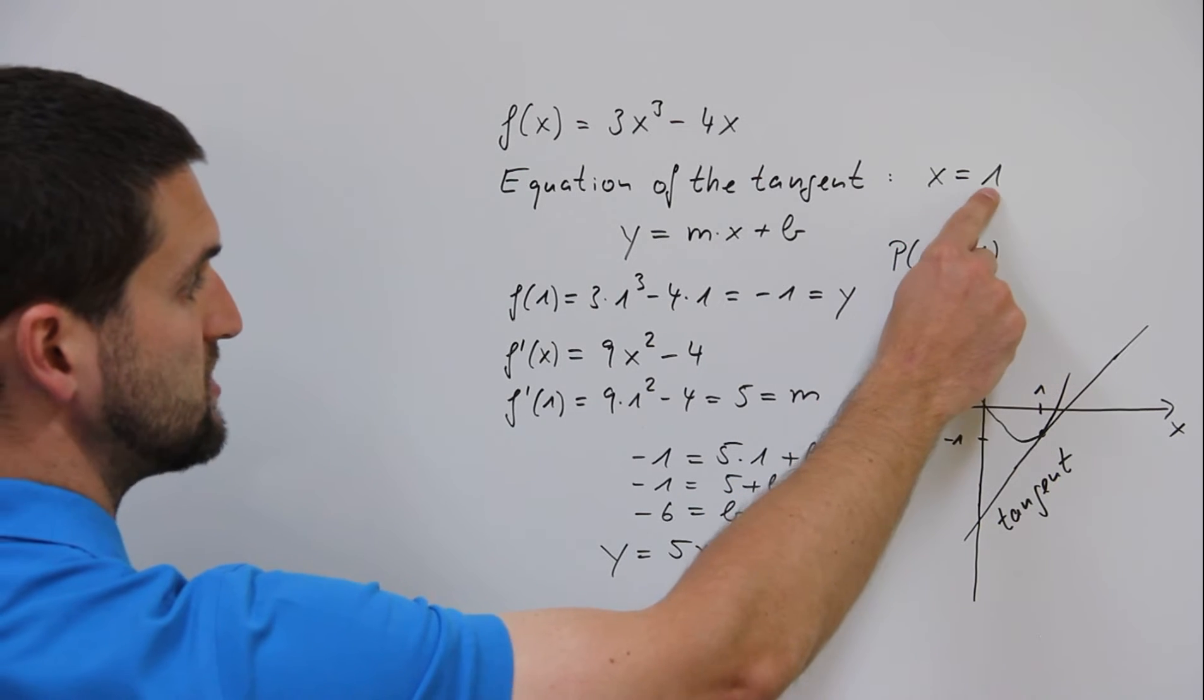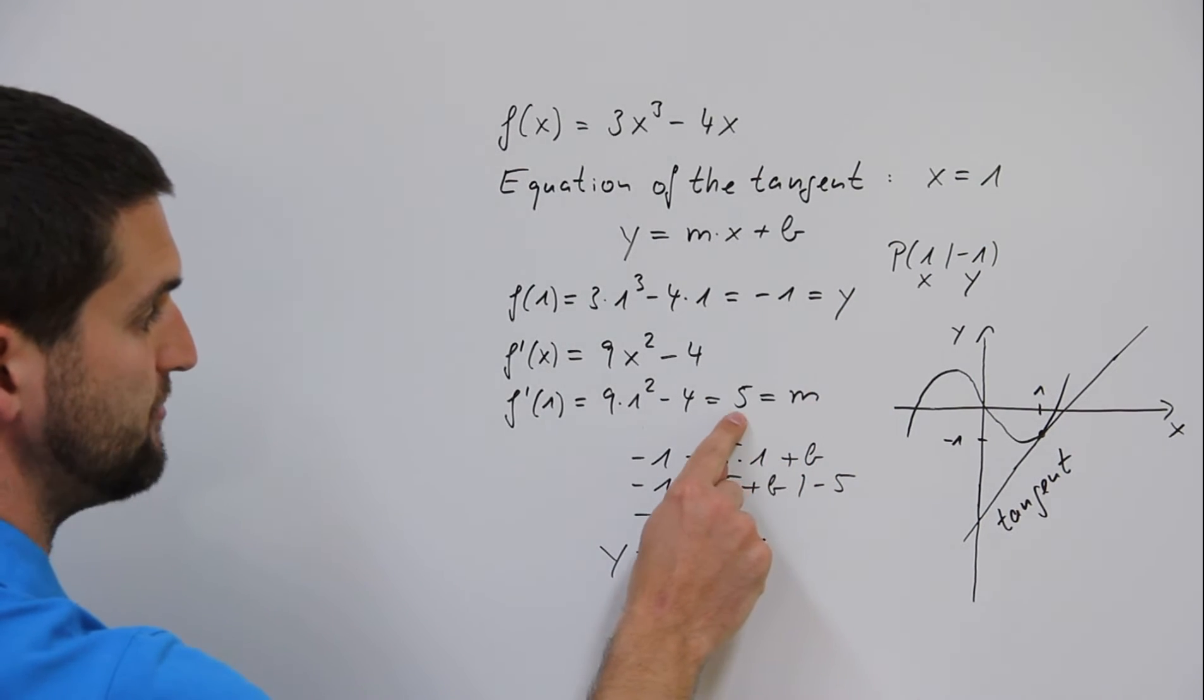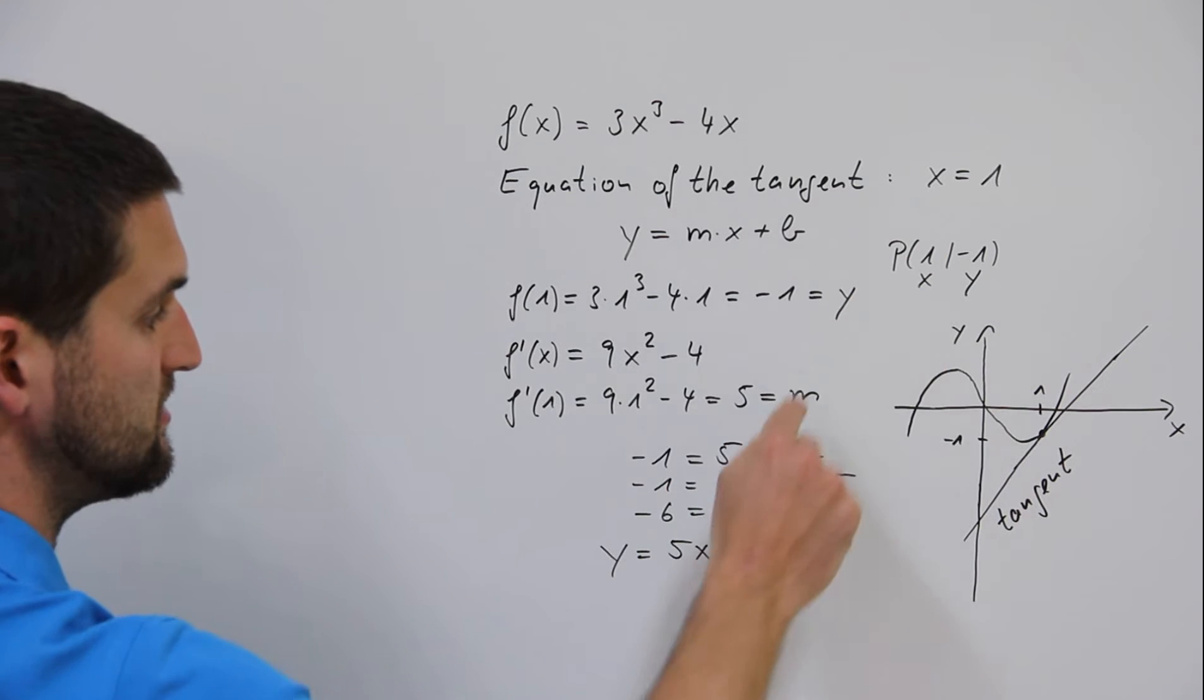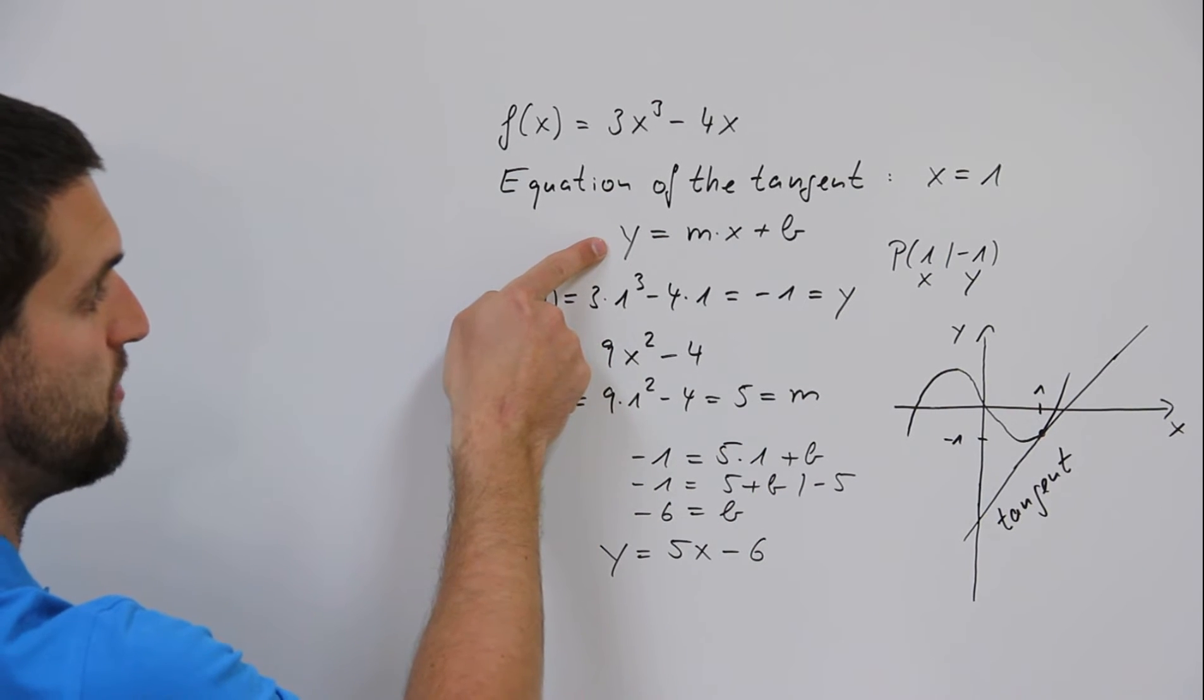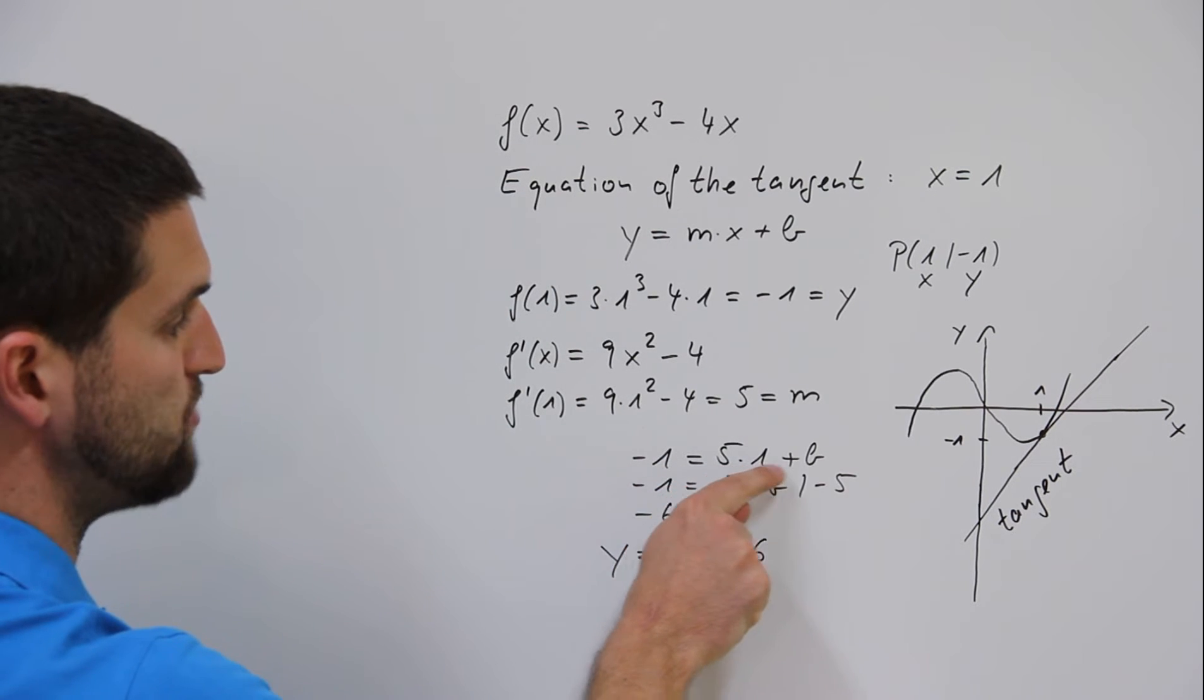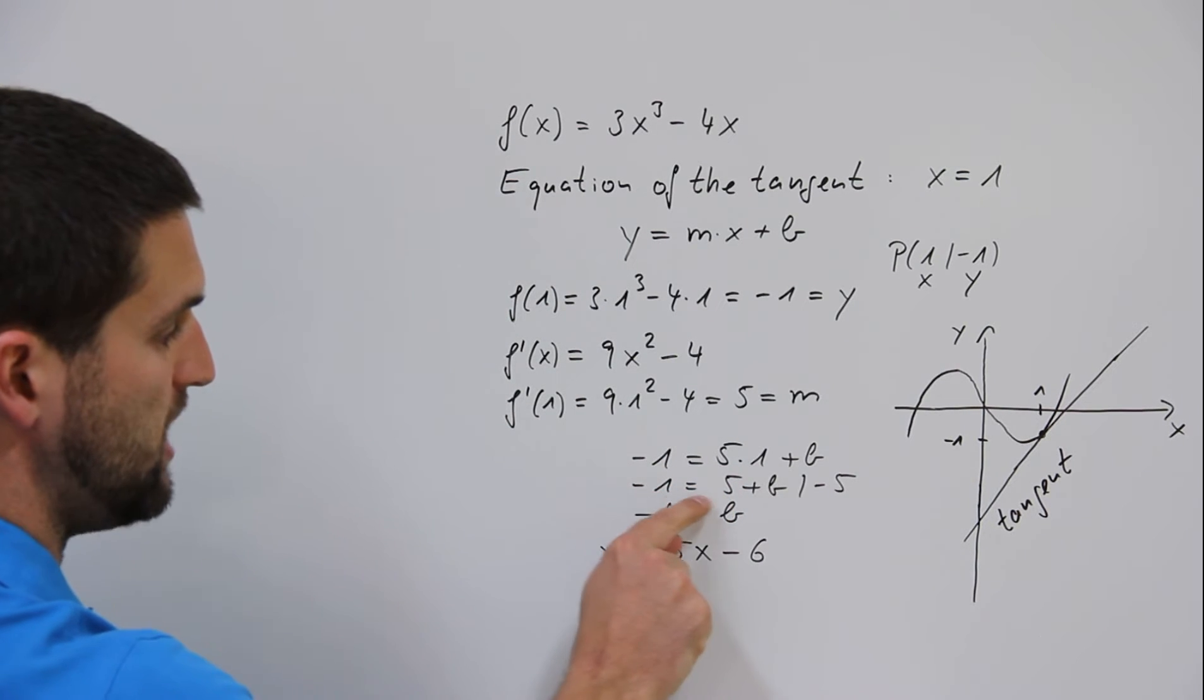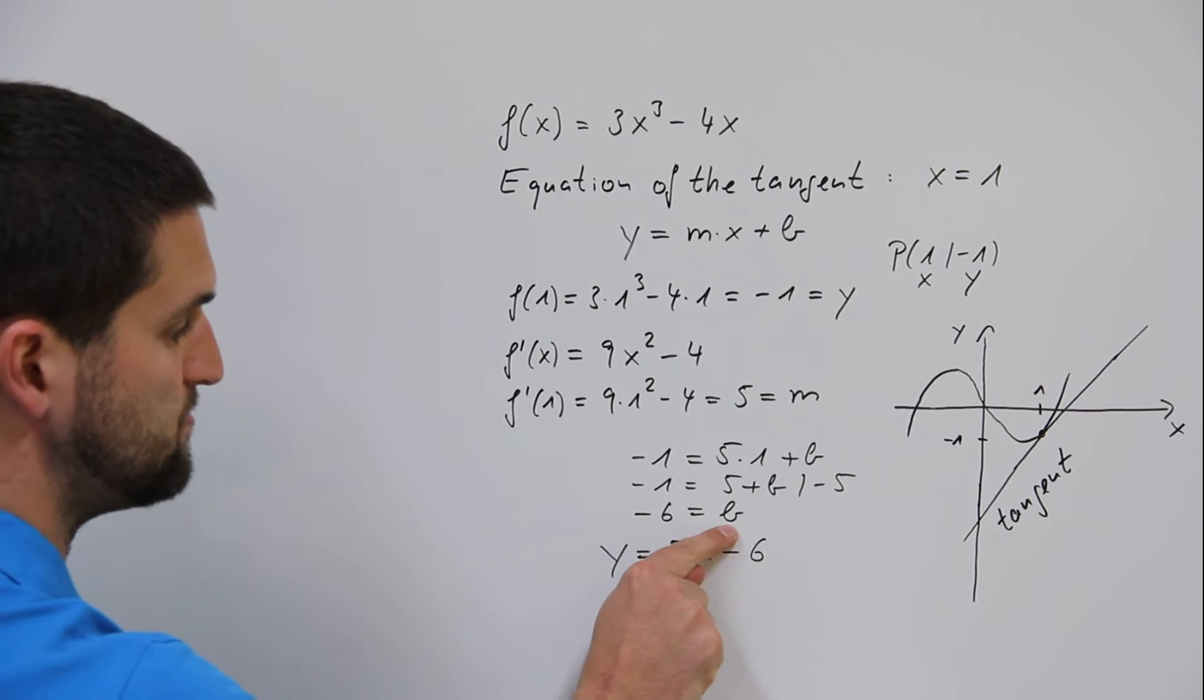We have x equals 1, y equals minus 1, m equals 5. The three values have to be set in the general equation. Minus 1 equals 5 times 1 plus b. Minus 1 equals 5 plus b. Moving minus 1 to the other side, minus 6 equals b.